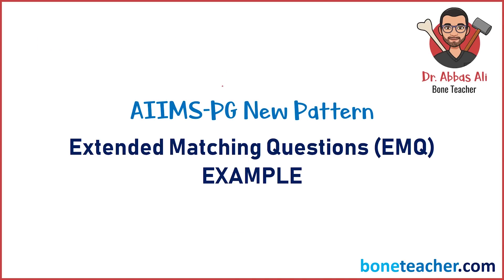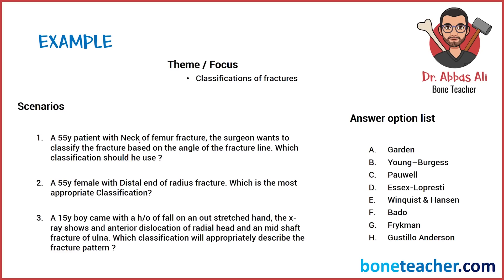Let's try an example to understand this better. The theme of the question is classification of fractures, and here is the option list with approximately eight options. The options are: Garten, Young and Burgess, Powell, Essex-Lopresti, Winqvist and Hansen, Bado, Frykman, and Gustilo-Anderson. There are three scenarios in this example.